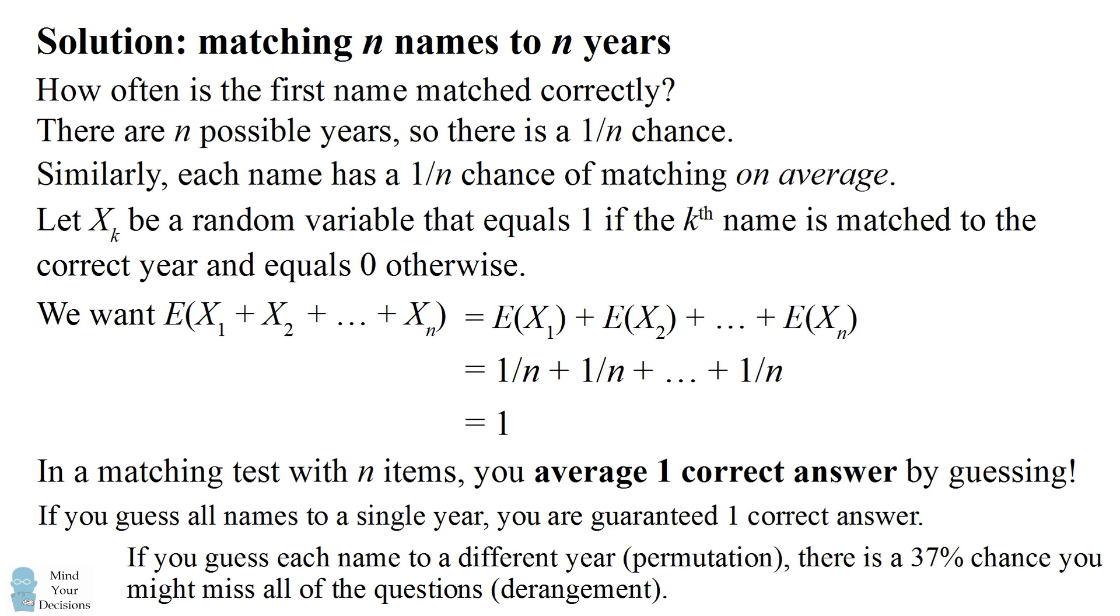If you're interested in how to derive that percentage, I provided a link. I went over this in the Secret Santa video. So there are different ways you can guess randomly. So on average, you're going to guess one correct answer. And if you just need one correct answer to pass the test and to go on, you might as well put all the names matching to a single year. But if you need more than one, you're probably better off guessing a permutation because although once in a while there's a 37% chance you might miss all of them, there's probably a good chance that you're going to get more than one correct. Did you figure out this problem?